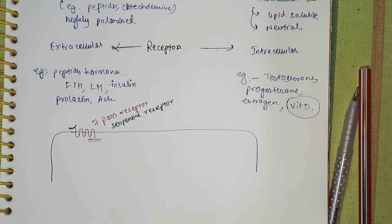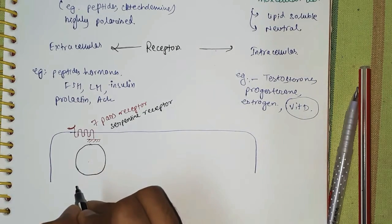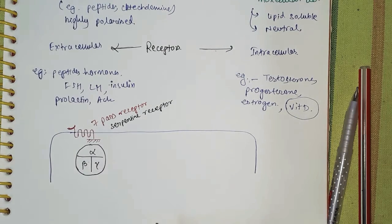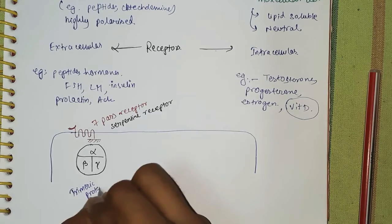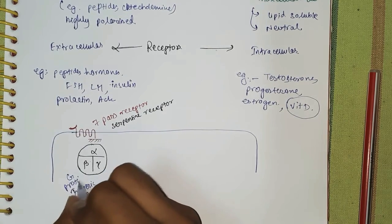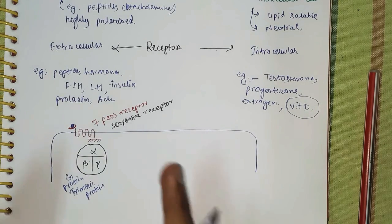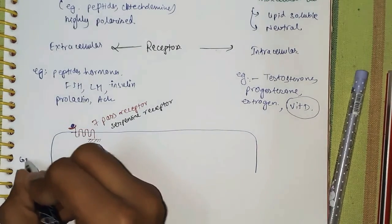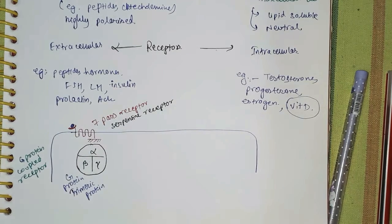These receptors are coupled with G proteins — this is the most important part of today's lecture. G protein has three components: the alpha, beta, and gamma subunits, so it is a trimeric protein. The overall receptor is named the G protein-coupled receptor (GPCR), and this is also the hormone or ligand binding side.